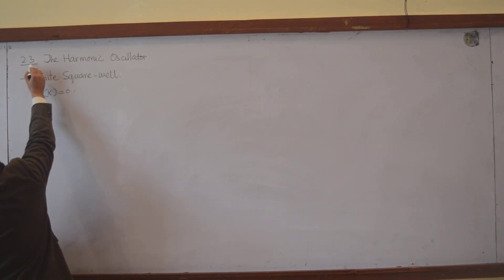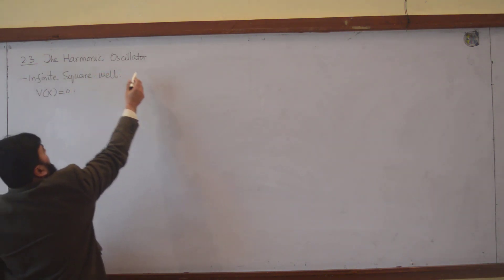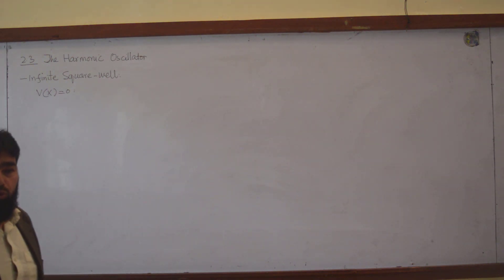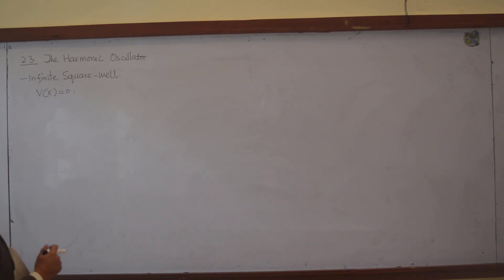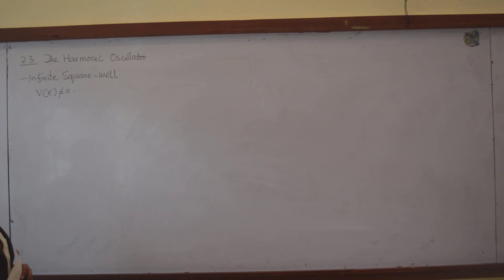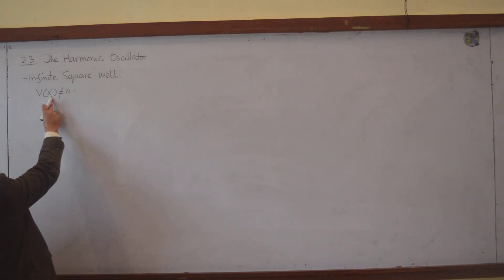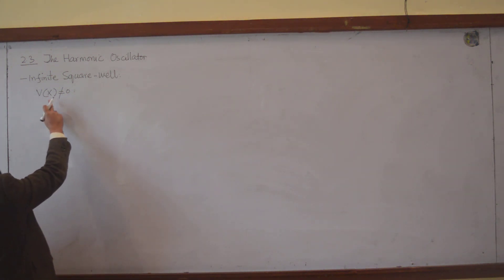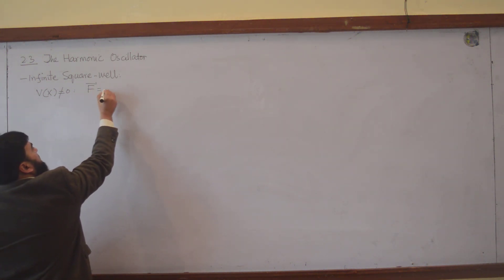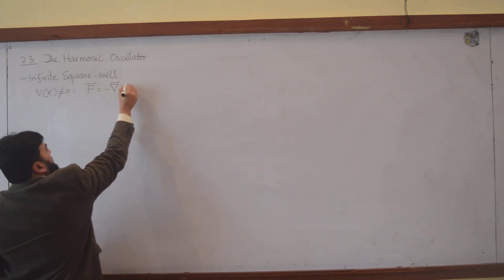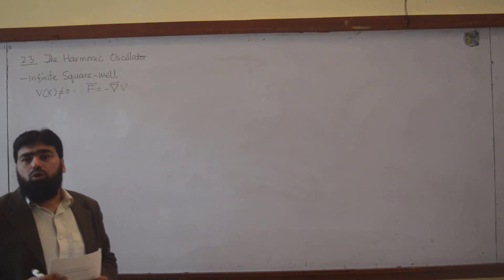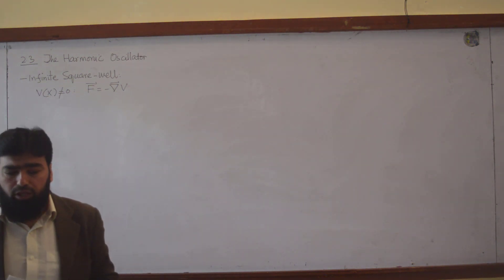Now in section 2.3, which is the harmonic oscillator, we will discuss the motion of the particle under a non-zero potential, where the particle will be under a certain potential. You know that the negative gradient of potential is called force, meaning the particle will move under the influence of a force.